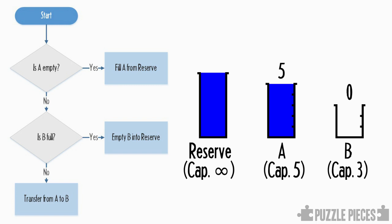We then go through again. Well, A is no longer empty, and B is not full either, so we'll transfer as much as we can from A into B, and that fills B up to 3 and leaves 2 left behind in A.